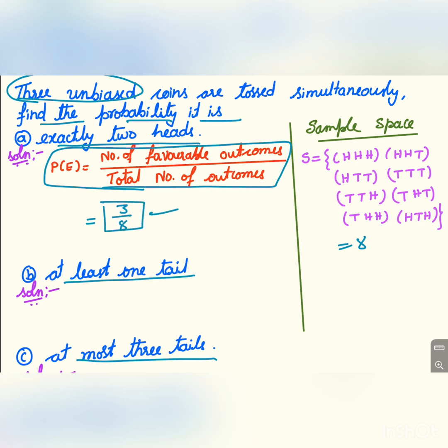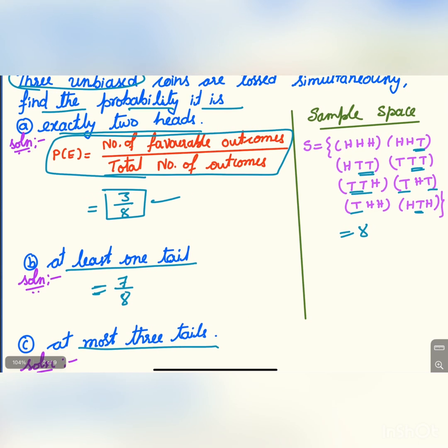Now the next one: at least one tail means it should have at least one tail in the sample space. HHH has no tail at all, hence the rest of the outcomes have tails. So the probability is seven favorable outcomes divided by eight. All outcomes except HHH are included.